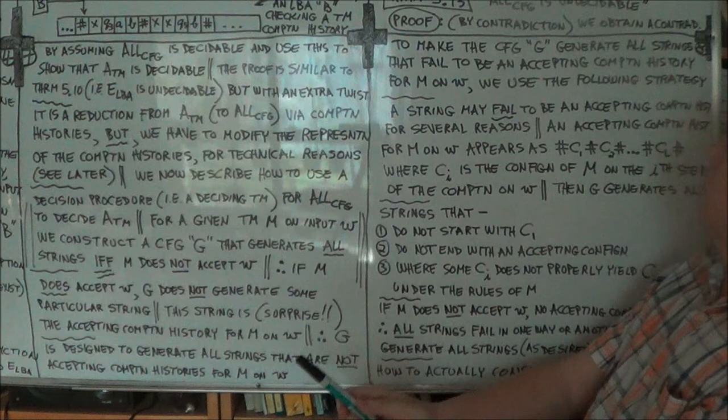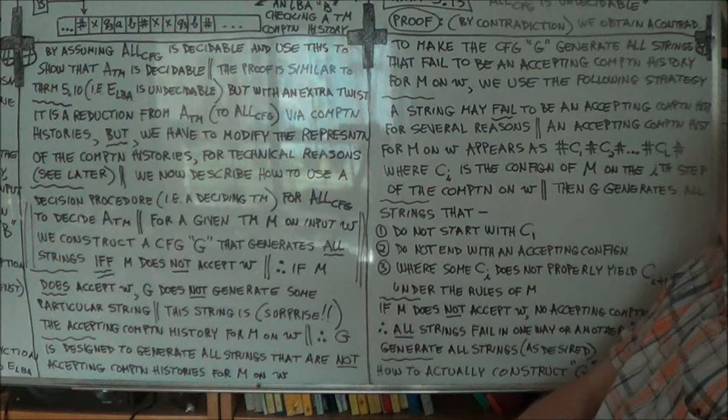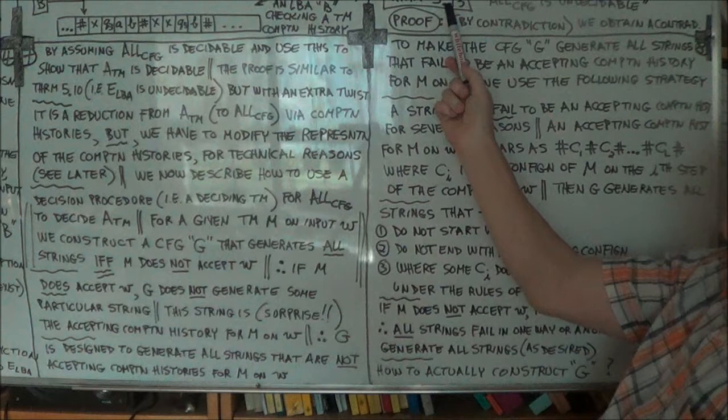As usual, we'll use proof by contradiction. Now the theorem — Theorem 5.13 — ALL_CFG is undecidable.